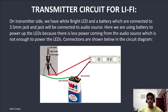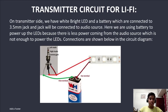Transmitter circuit for Li-Fi. On the transmitter side, we have a white bright LED and a battery which are connected to a 3.5mm jack, and the jack will be connected to the audio source. We are using a battery to power the LEDs because there is insufficient power coming from the audio source alone. Connections are shown in the circuit diagram below.